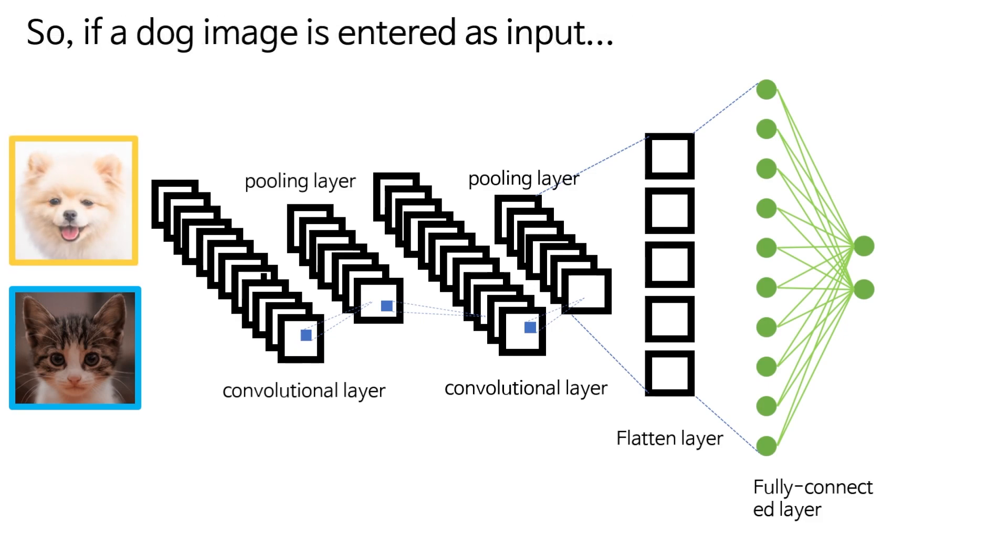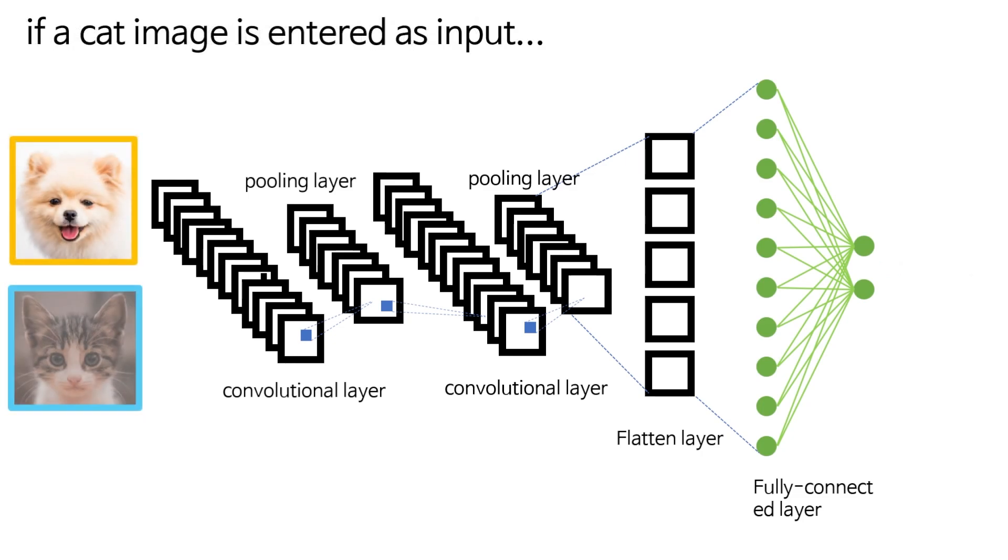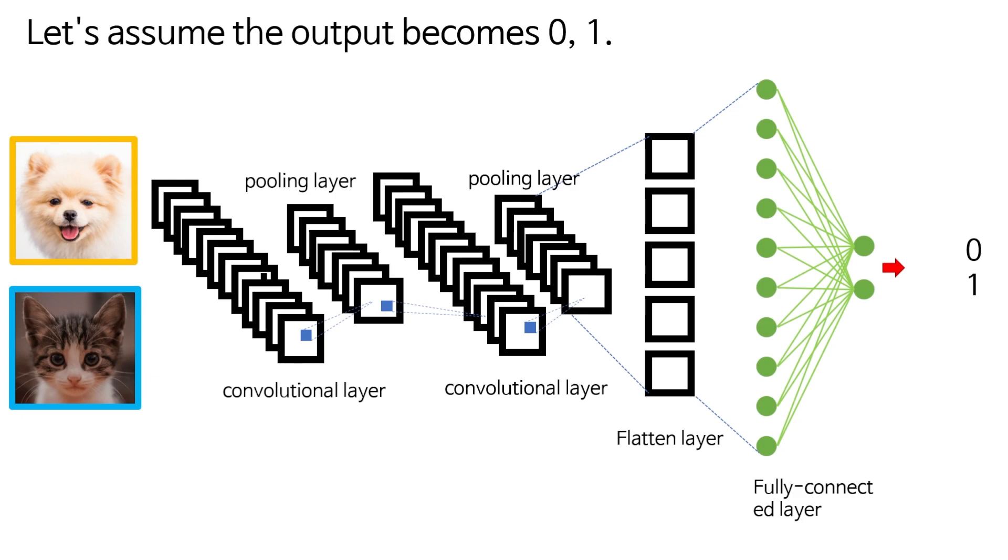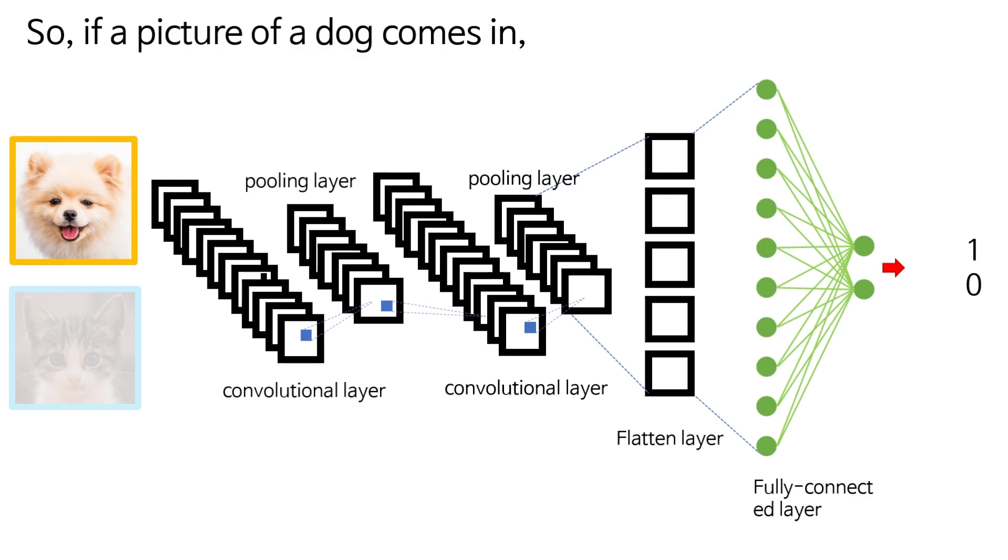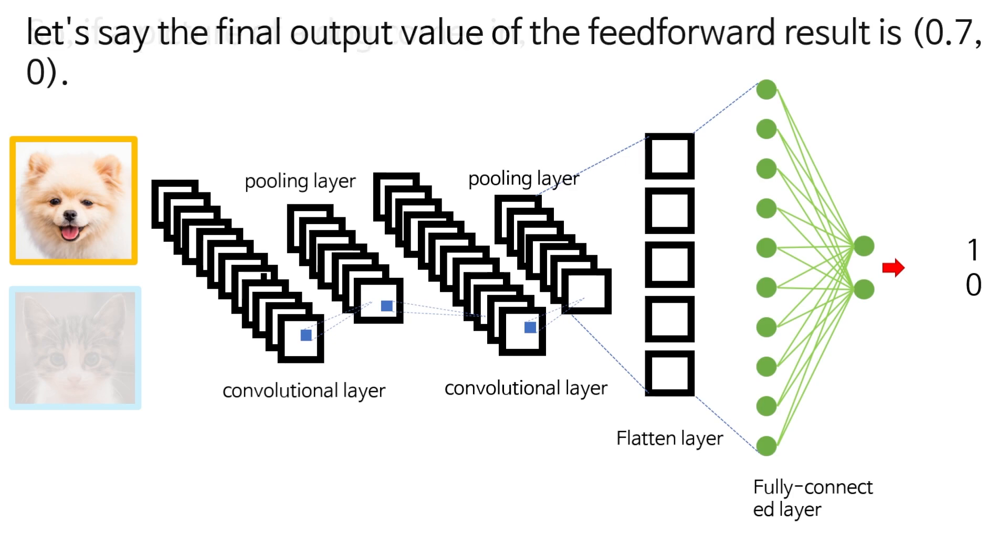So if a dog image is entered as input, the output becomes 0, 1. And if a cat image is entered as input, let's assume that the output becomes 1, 0. So if a picture of a dog comes in, let's say the final output value of the feedforward results is 0.7 and 0.